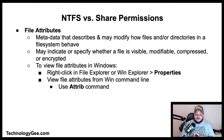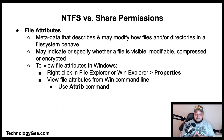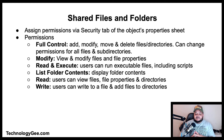File attributes are a type of metadata that describe and may modify how files and/or directories in a file system behave. Typical file attributes may indicate or specify whether a file is visible, modifiable, compressed, or encrypted. To view file attributes in Windows, just right-click in File Explorer and select Properties. To view file attributes from the Windows command line, use the attrib command.